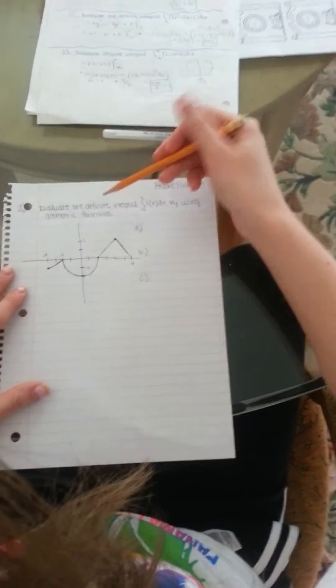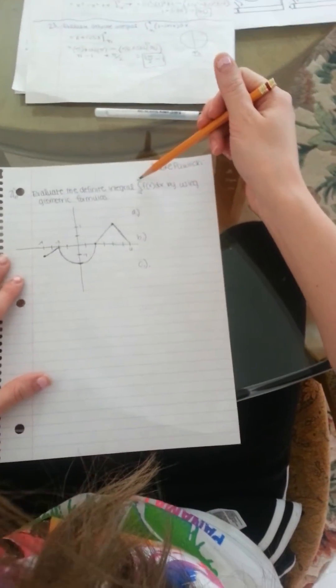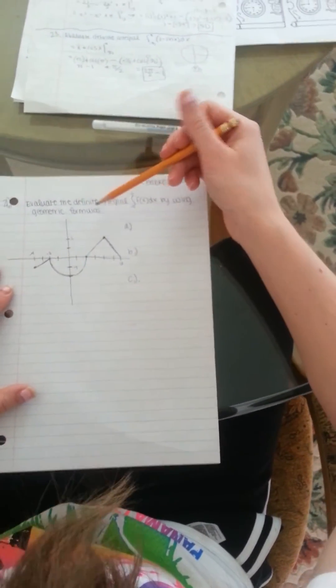The problem says to evaluate the definite integral from negative 4 to 6 of f of x dx by using geometric formulas.